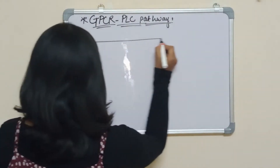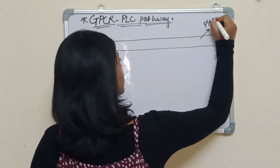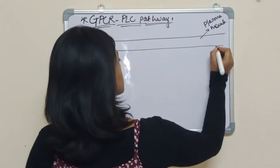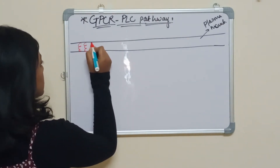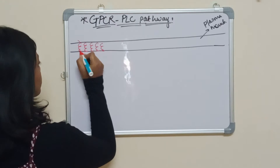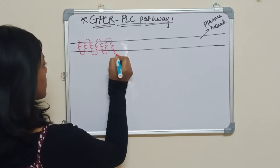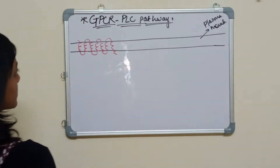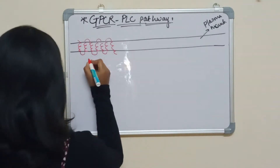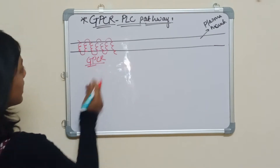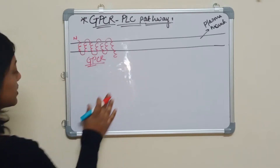This is the plasma membrane of the cell. Now, GPCR is present here. We have already discussed about the GPCR — how the GPCR protein is. It transmits the membrane seven times. This is the N terminal and this is the C terminal.